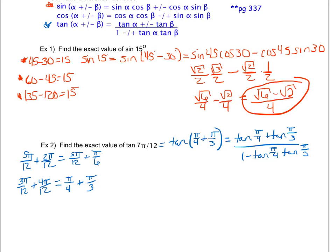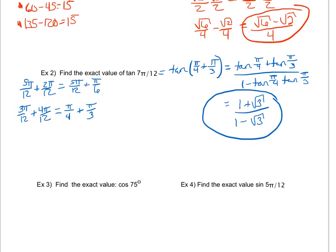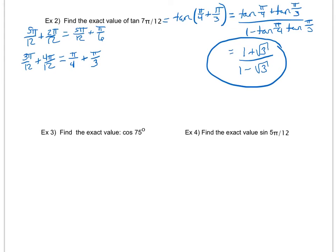I now take those values from my unit circle. With tangent I do a little more work — I take the sine value divided by the cosine value. For tangent of π/4 I get 1. For tangent of π/3 I get square root of 3. On the bottom I get 1 minus 1 times the square root of 3. I cannot reduce with add or subtract, so this is going to be my simplest answer. If you're unsure of where that radical 3 comes from, I'm taking my sine value and dividing by my cosine value at π/3, something we studied in the previous unit.